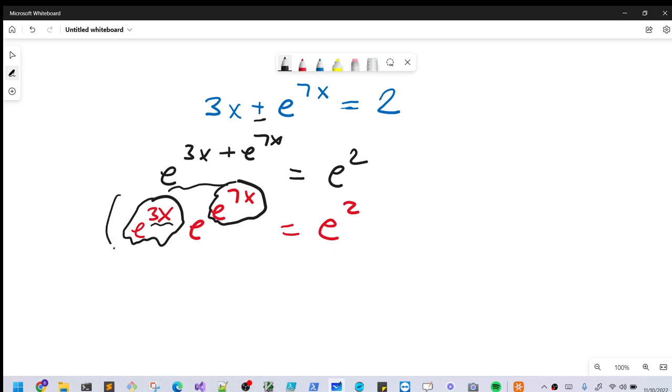For that, what I'll do is let's raise both sides to the 7 thirds power. I think you'll see that that's going to work out pretty nice. Because when we split these two terms up, we'll have e to the 3x to the 7 thirds times e to the e to the 7x to the 7 thirds. And then on the right, we're going to have e to the, just multiplying this in, we're going to have e to the 14 thirds.